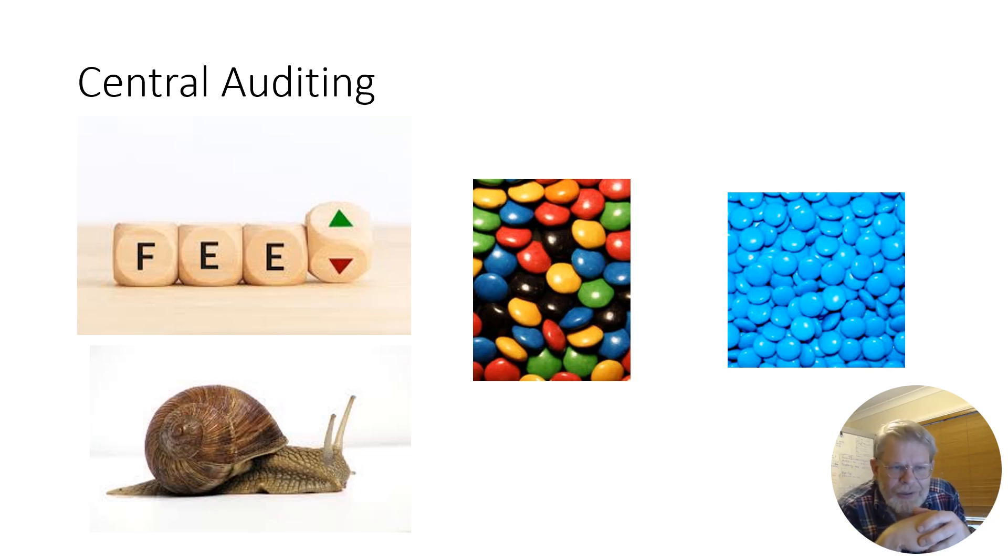Yet a third problem with central auditing is we've gone from having packs of Smarties with lots and lots of different colours, to having packs of Smarties that are just the blue ones. Now I like blue Smarties, but I don't want to ever open a packet and only have blue Smarties. We've standardised things too much, particularly in terms of depreciation accruals. And that's actually contrary to the intent of the IFRS and the AASB.